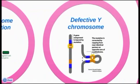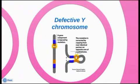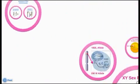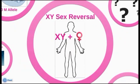In a defective Y chromosome, the individual presents a female phenotype even though the person possesses an XY karyotype. XY sex reversal refers to the development of abnormal gonads with female characteristics in a person with sex chromosomes XY.